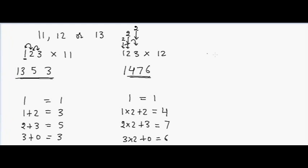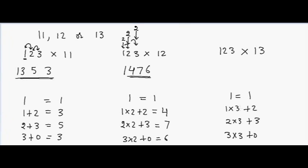Now let's multiply 123 by 13. I'll do the same: the first digit stays as 1. The second digit is 1×3 plus 2. The third digit is 2×3 plus 3. And then 3×3 plus 0. Here I multiplied all the numbers by 3. Adding these up gives 5, 9, and 9. So the answer is 1599.